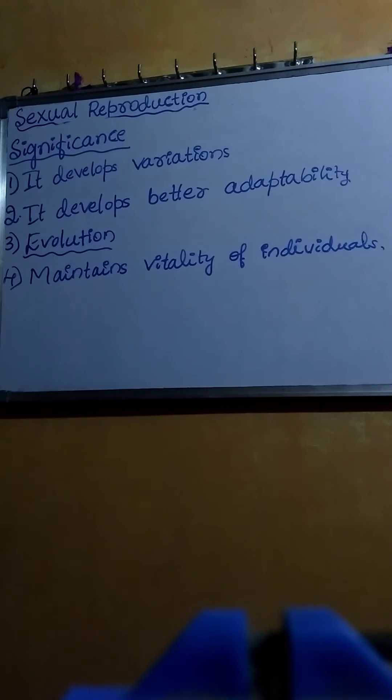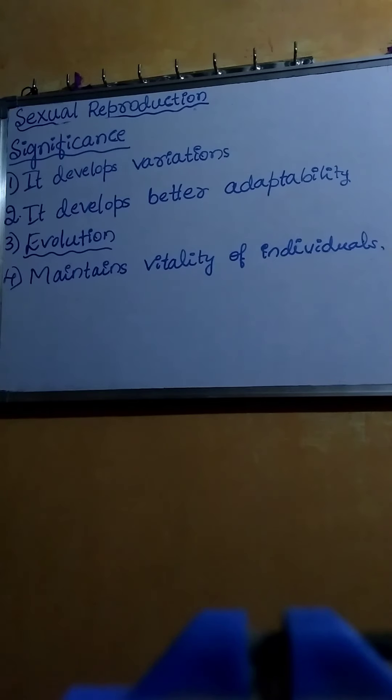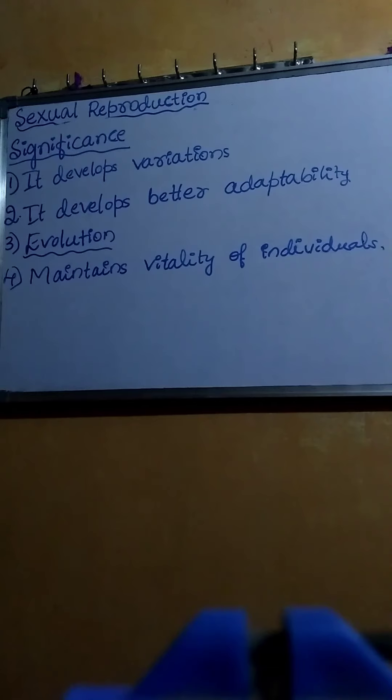In the next class, let us discuss about sexual reproduction in flowering plants — the structure of the bisexual flower and the reproductive organs present in the bisexual flower. Thank you.